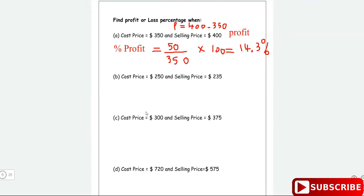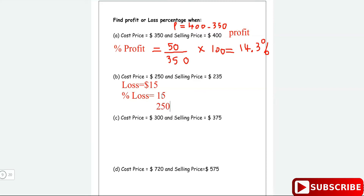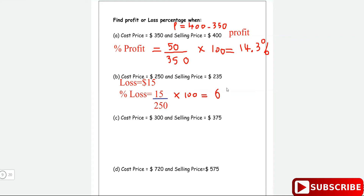Now the selling price is less than the cost price, so there is a loss of 15 dollars. The percentage loss is equal to the amount lost divided by the cost price, multiplied by 100. So it's 15 divided by 250 multiplied by 100, which gives us a percentage loss of 6 percent.